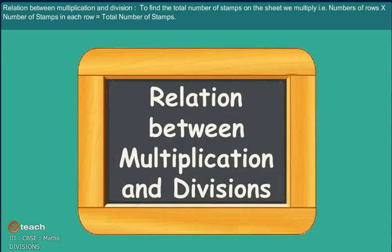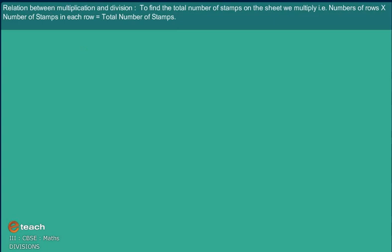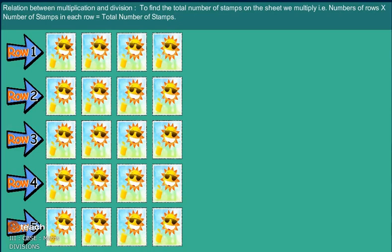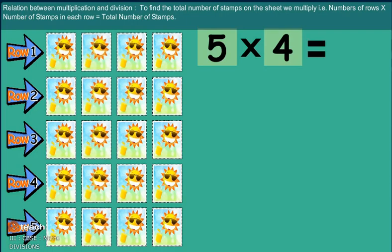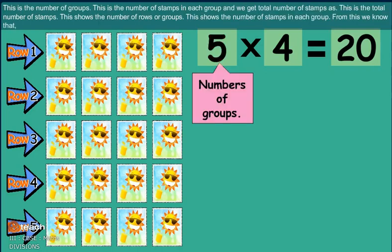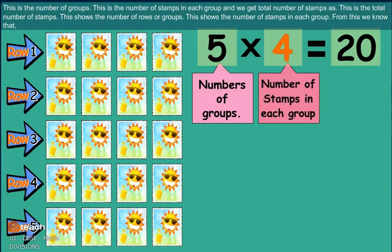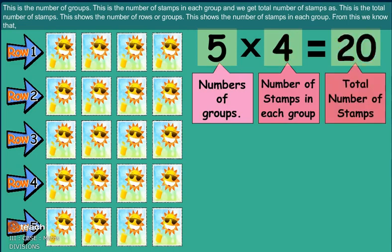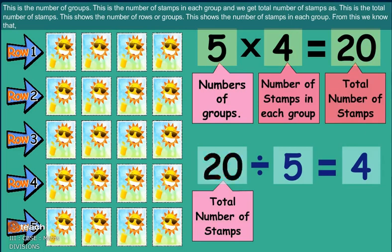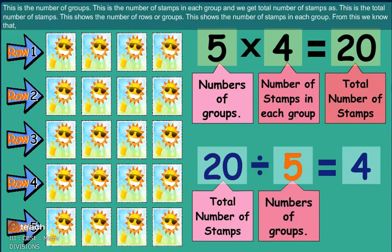Relation between multiplication and division. To find the total number of stamps on the sheet we multiply: number of rows multiplied by number of stamps in each row equals total number of stamps. This is the number of groups. This is the number of stamps in each group, and we get total number of stamps.